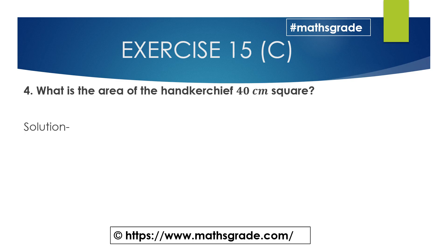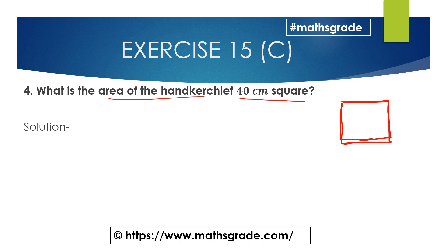Now we will solve question number 4: what is the area of the handkerchief whose side is 40 centimeter? The shape of this handkerchief is a square. It is given that the side is 40 centimeter, and since all sides of the square are equal, all sides of this handkerchief are 40 centimeter.